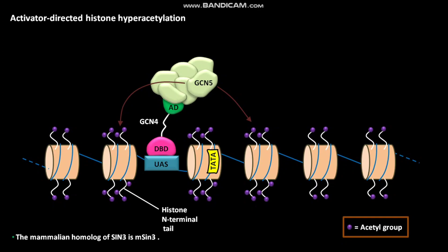The mammalian homologue of SIN3 is MSIN3.